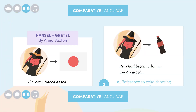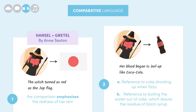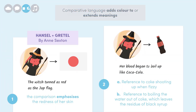So, once again, comparative language adds color to or extends meanings. In this case, referring to a Japanese flag allowed Sexton to emphasize the flame's vivid redness. And referring to Coca-Cola allowed her to create a super vivid, disturbing, and slightly too delicious image of boiling blood.